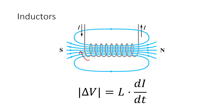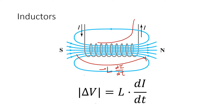The back EMF will kind of curve down, and then eventually, after a long time, the inductor behaves like a resistanceless wire. The potential difference across the inductor depends on the direction of current. If you're going with current, it's negative L·di/dt, but if you're going against current, it's positive L·di/dt.